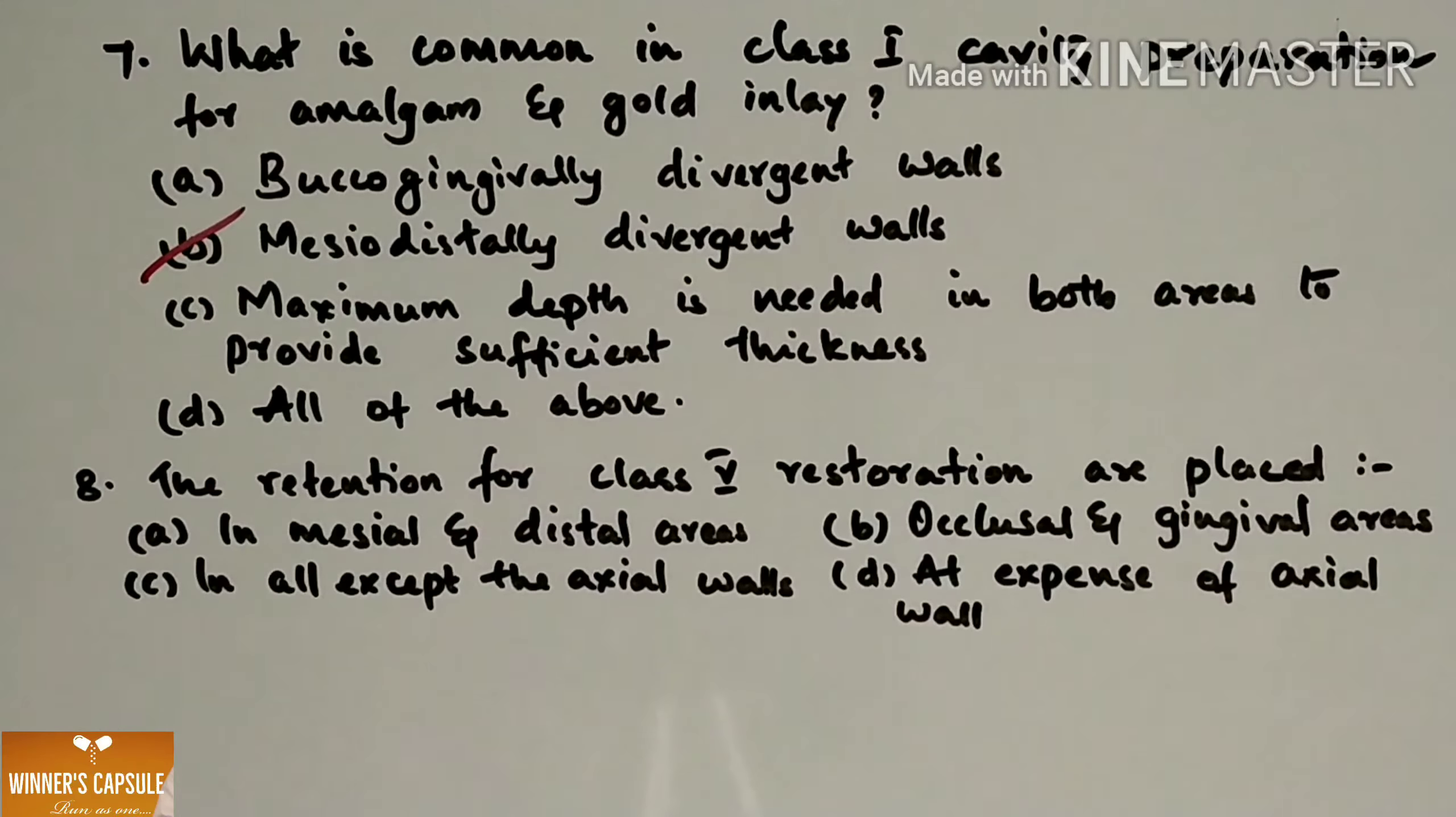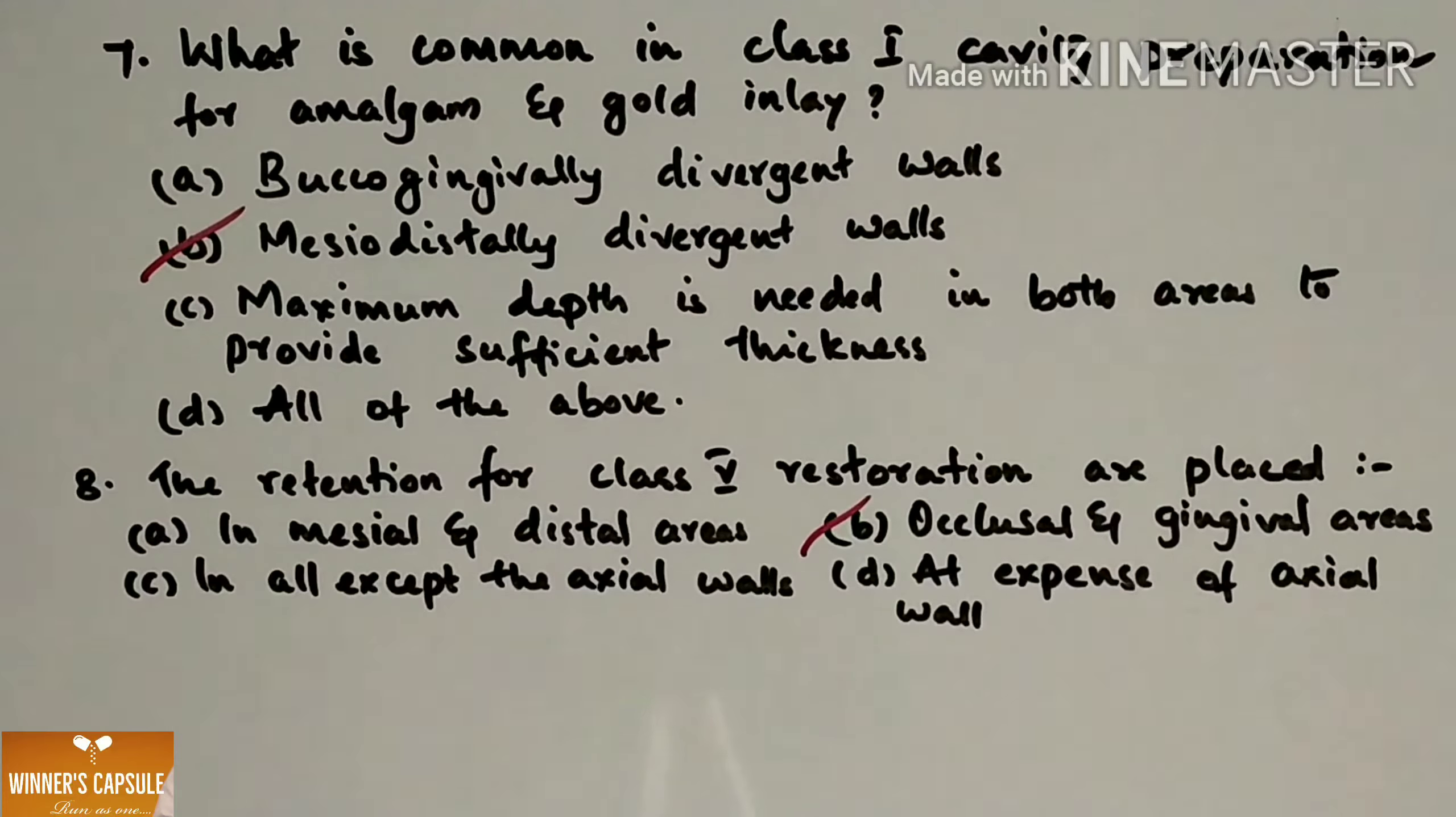The retention for class 5 restoration are placed (a) In mesial and distal areas (b) Occlusal and gingival areas (c) In all except the axial walls and (d) At expense of axial walls. Answer is option B, occlusal and gingival areas.